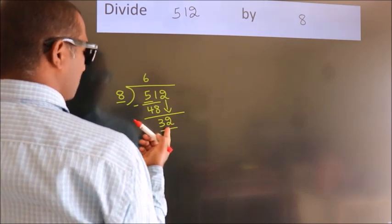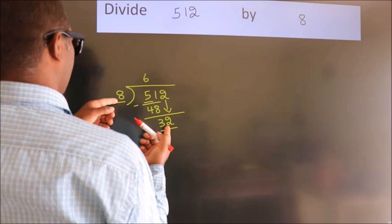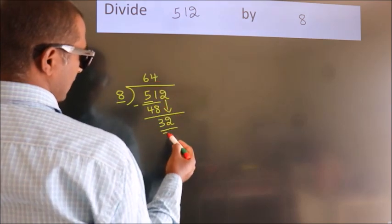When do we get 32? In 8 table. 8 times 4 is 32.